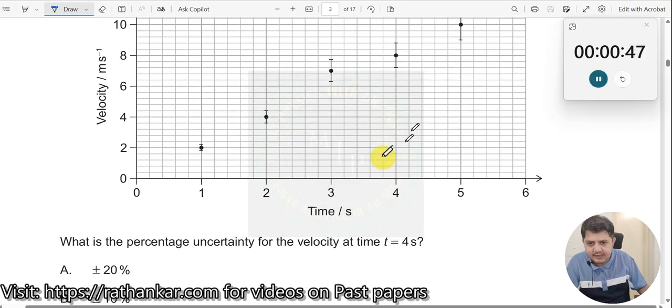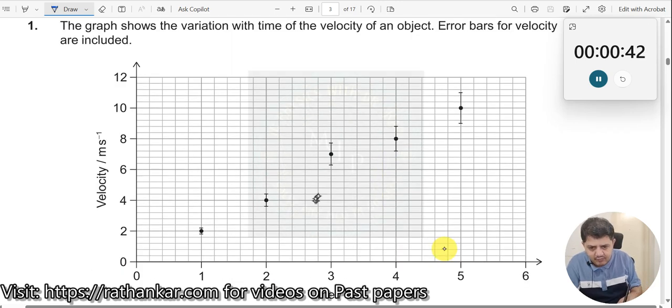Okay. Here. And then, what is the percentage uncertainty for the velocity at time t equal to 4 seconds? So, at time t equal to 4 seconds, this is the velocity. What is the velocity here? This is 8 meter per second.